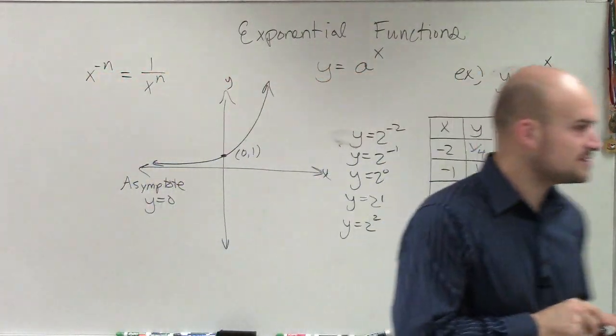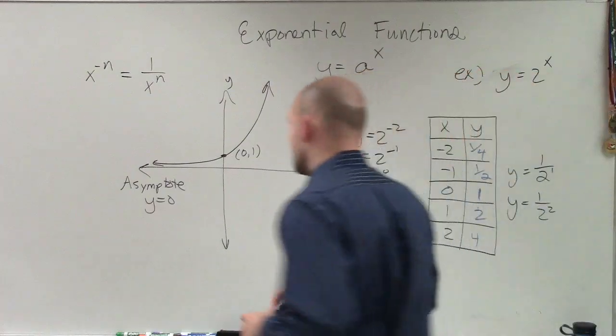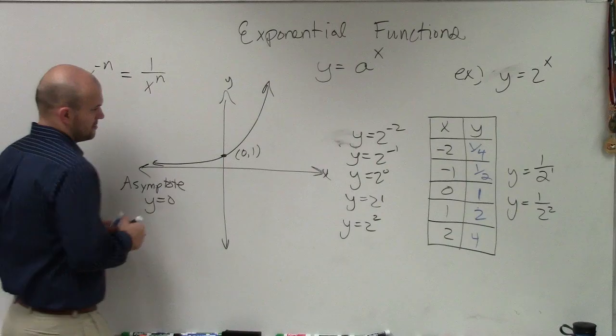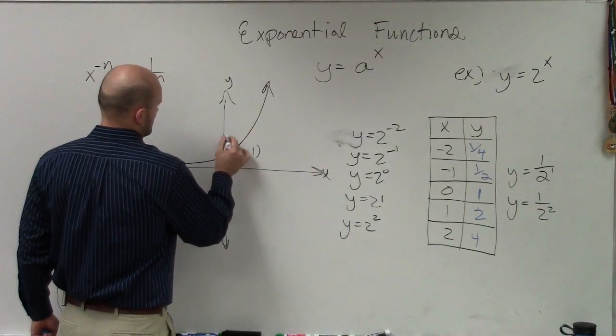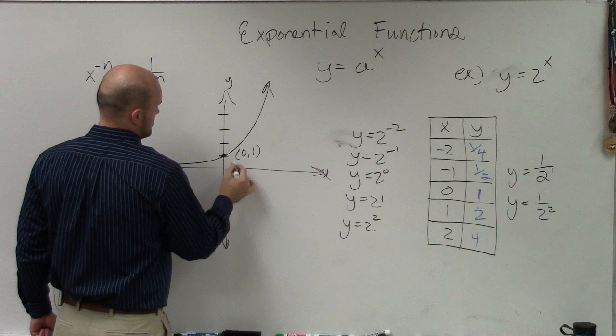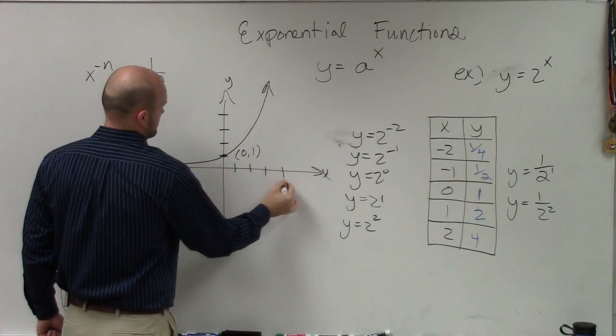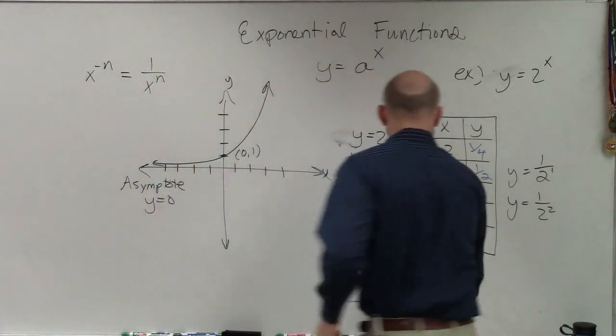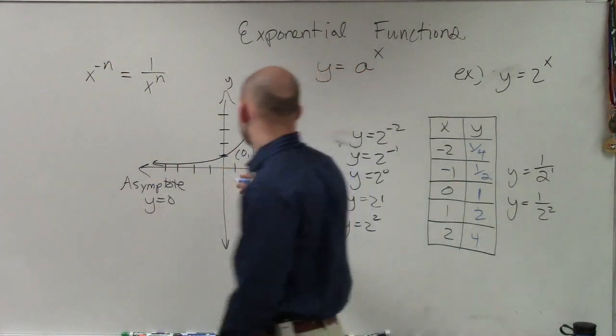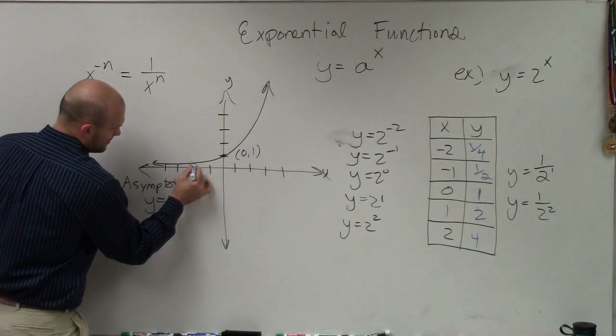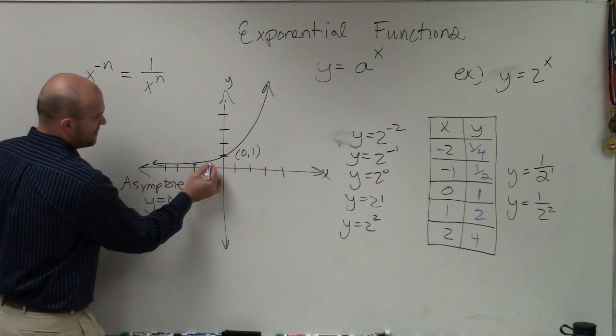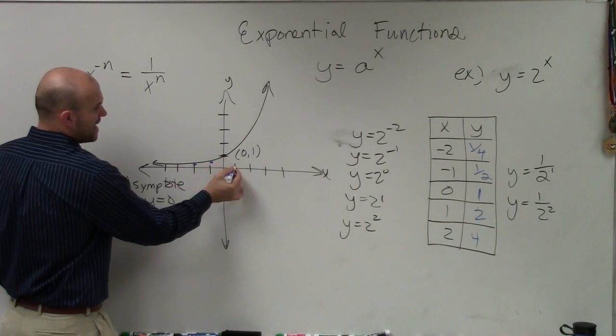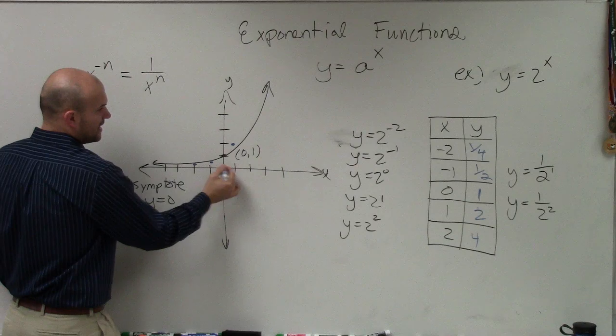All right. So now, ladies and gentlemen, let's go ahead and graph this. If you guys look, let's do negative 2. At negative 2, I'm at 1 fourth. At negative 1, I'm at 1 half. At 0, I'm at 1. At 1, I'm at 2. And at 2, I'm at 4.